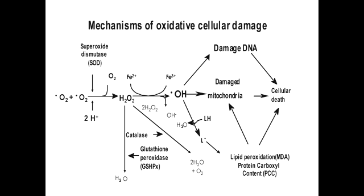Acetaminophen overdose can lead to fulminant hepatitis, and iron overload can lead to hemochromatosis. Fulminant means that it has a severe and sudden onset.